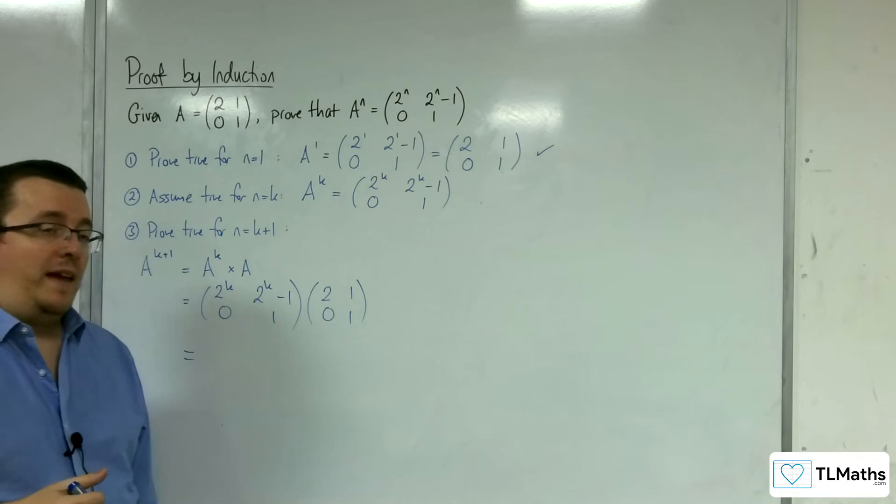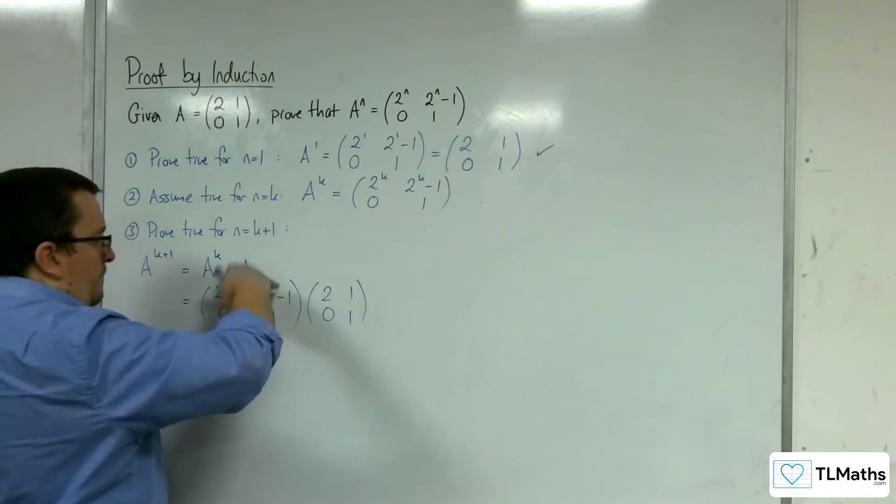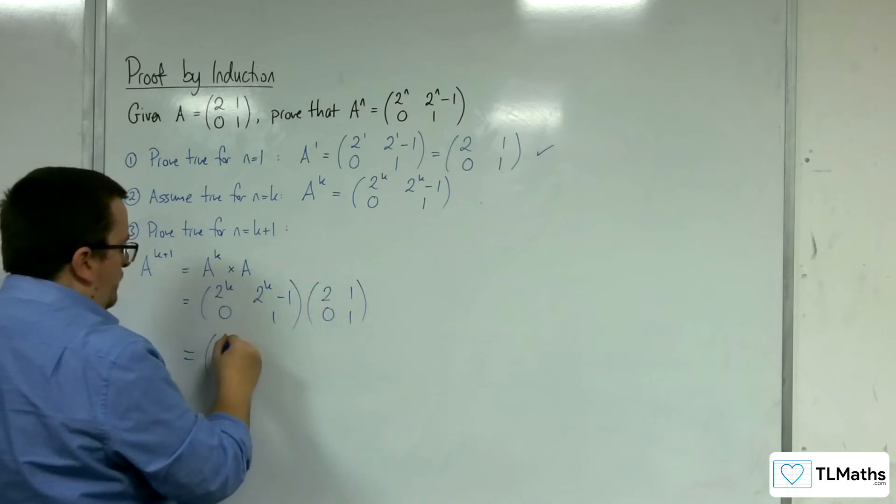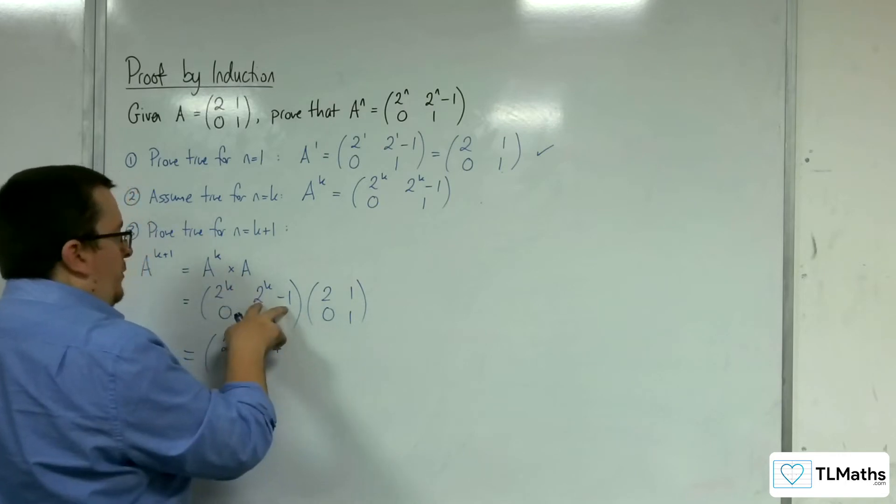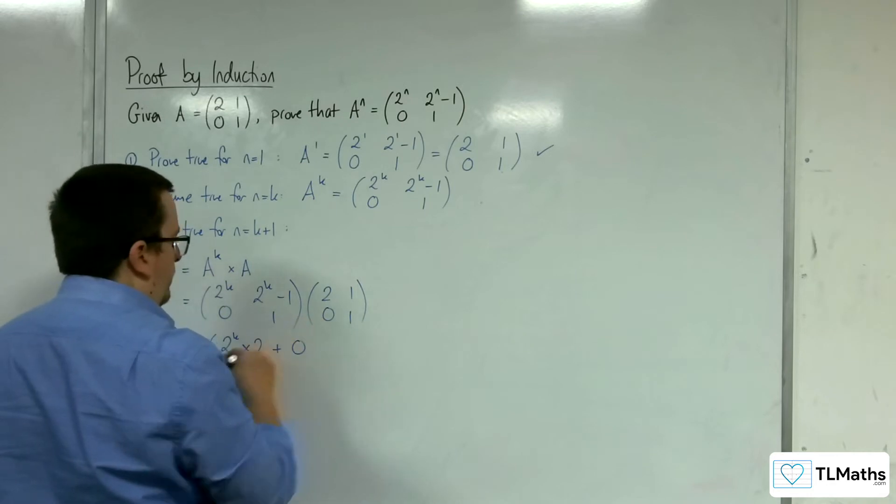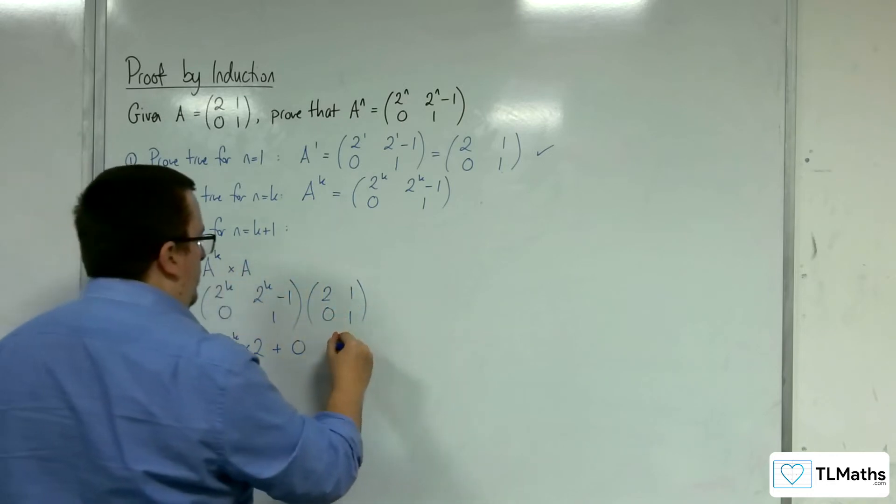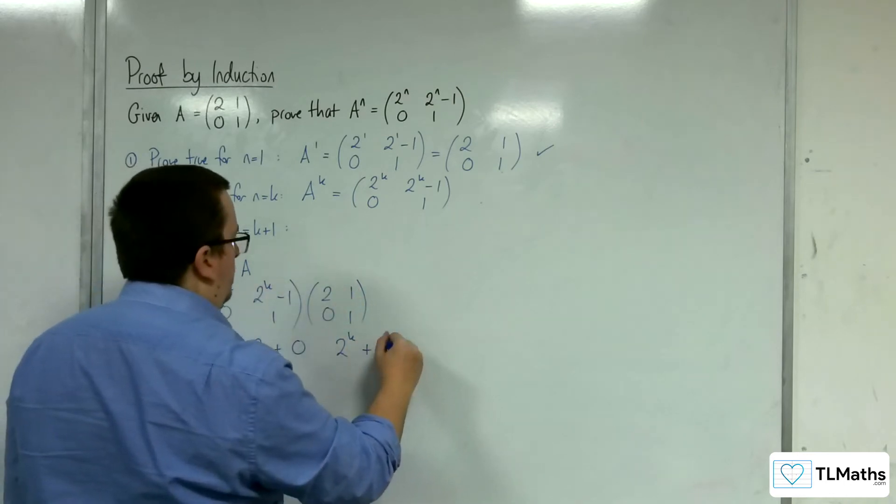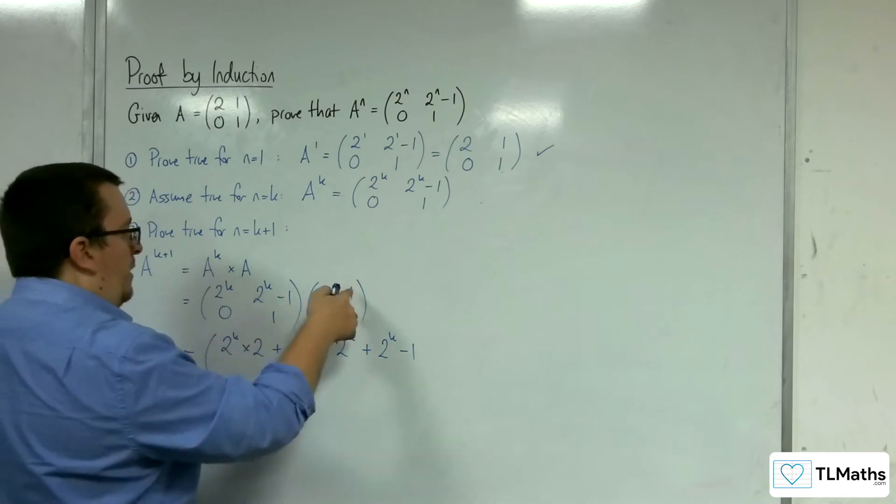We're going to multiply these two matrices together. The top row multiplied by the first column gives us 2^k times 2, plus 2^(k-1) times 0. The top row multiplied by the second column gives 2^k times 1 plus 2^(k-1). The bottom row with the first column is 0, and with the second column is 1.